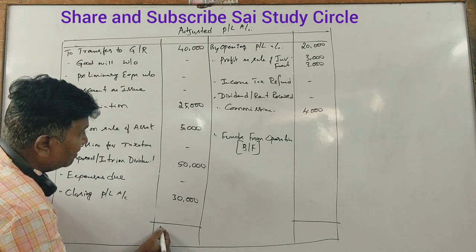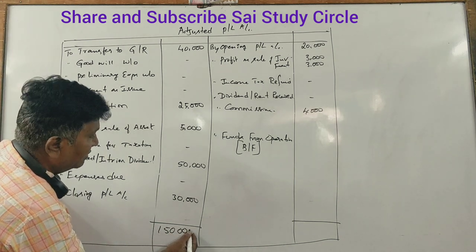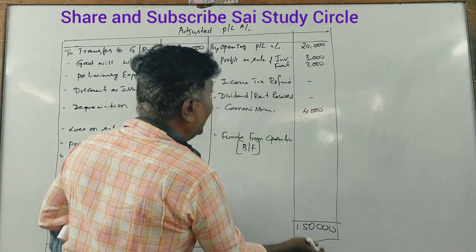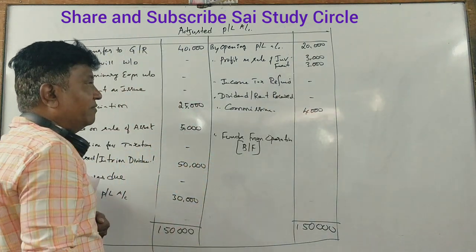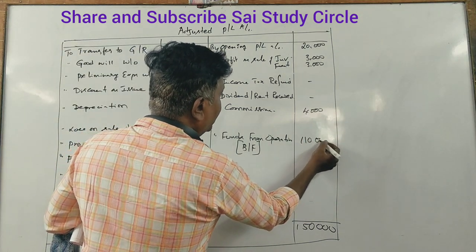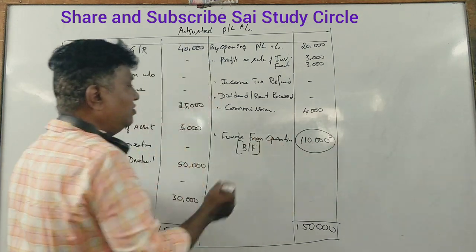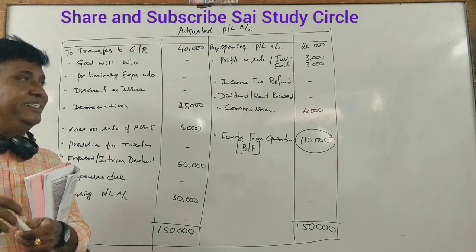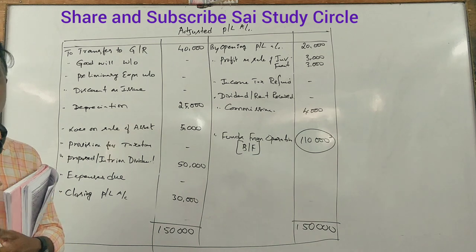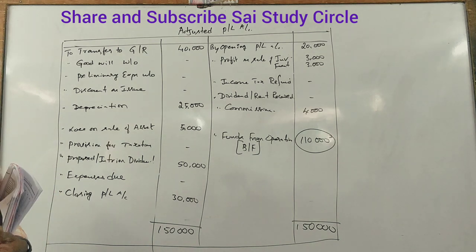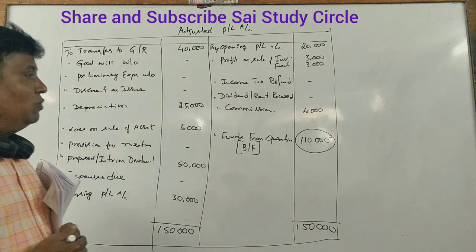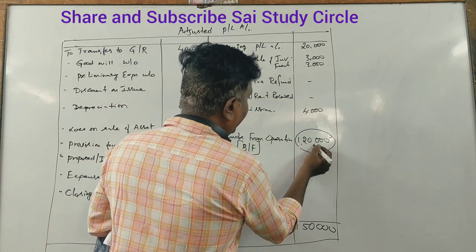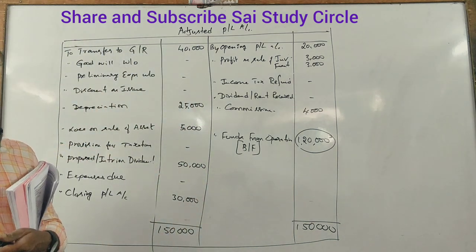The balancing figures are: 50,000 rupees, then 5,000 rupees, 4,000 rupees, and 1,000 rupees — these are the calculated results for the adjusted profit and loss account.